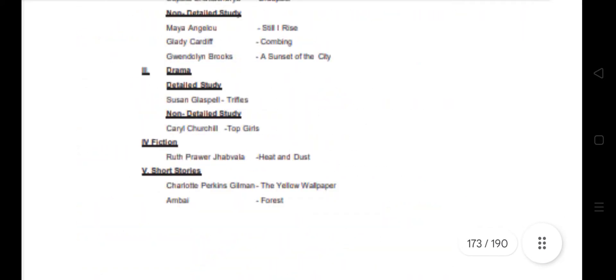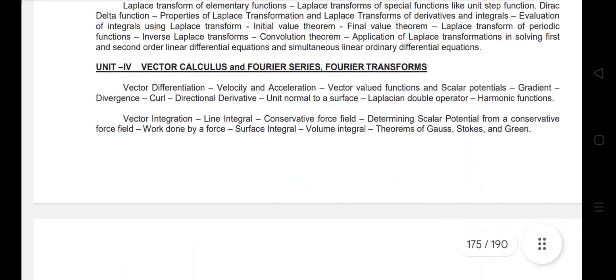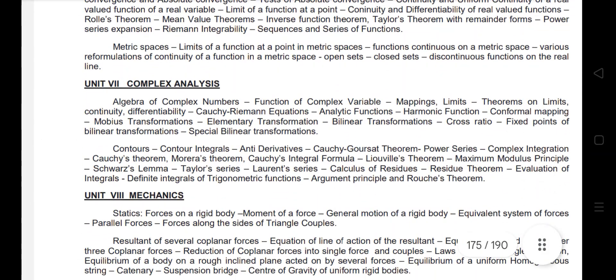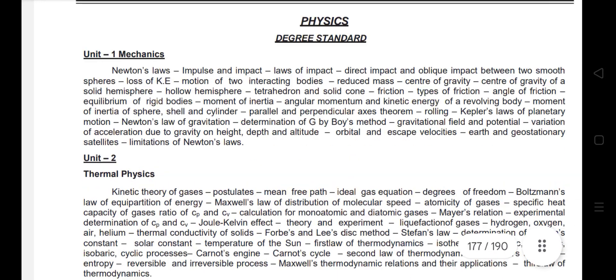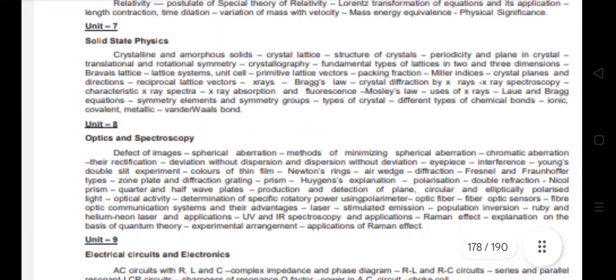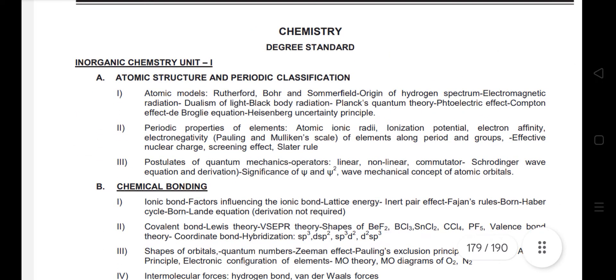We can see all the subjects in the UGTRB syllabus. First, there is physics. We'll go for chemistry. You can see there are 10 units in chemistry, so it's very simple.